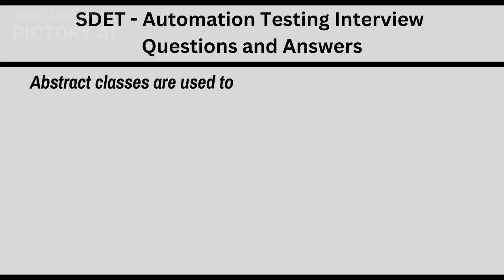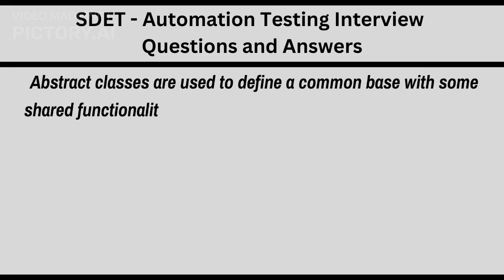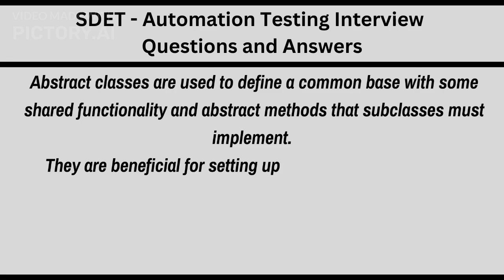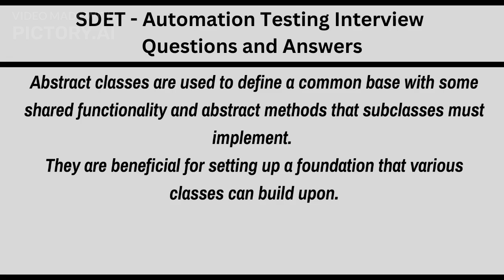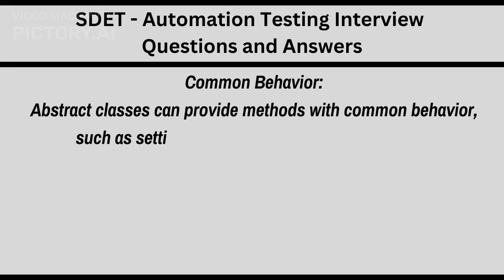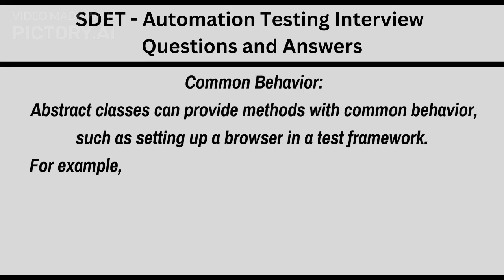Abstract classes are used to define a common base with some shared functionality and abstract methods that subclasses must implement. They are beneficial for setting up a foundation that various classes can build upon. Abstract classes can provide methods with common behavior, such as setting up a browser in a test framework.